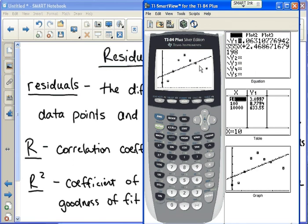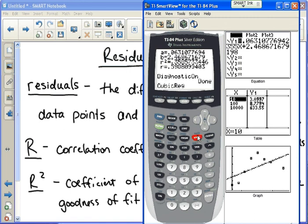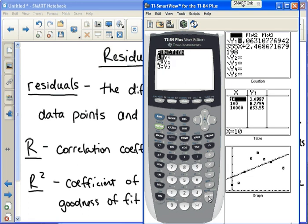We go to stat, go to calc. We can do number six for cubic. I want it to plug it in for me. So I go to vars and then yvars. So it plugs into y1. And I get this. All right, now this r squared is .88.